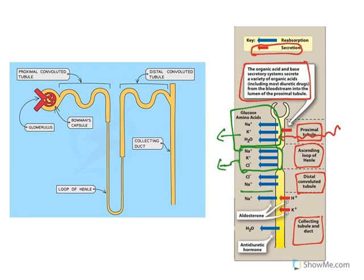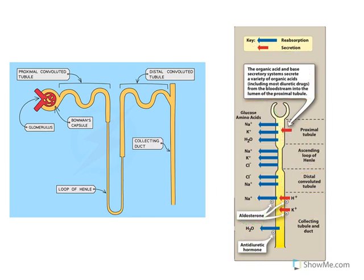From the distal tubule, sodium and chloride are reabsorbed. At the collecting duct, two hormones act: aldosterone, a mineralocorticoid that reabsorbs sodium, and antidiuretic hormone (ADH), which reabsorbs water — thereby reducing urinary output. When sodium is reabsorbed at this point, it is exchanged with a proton or potassium, so increased sodium reabsorption results in loss of proton and potassium.